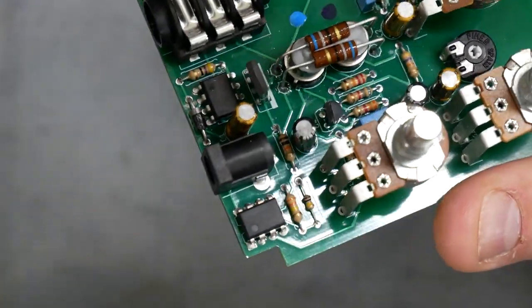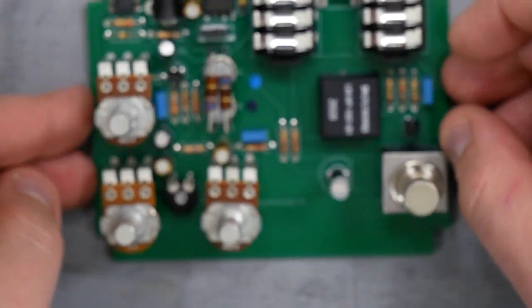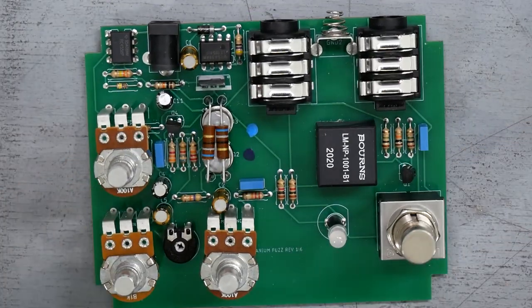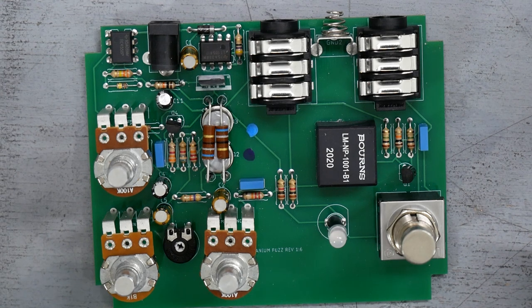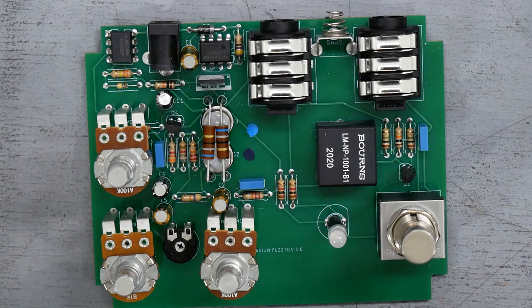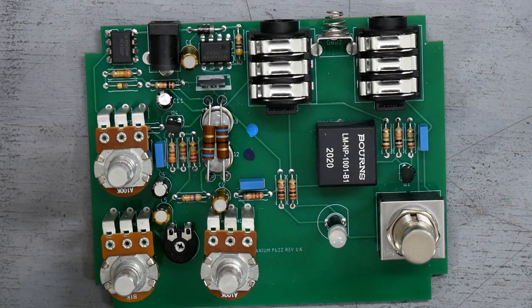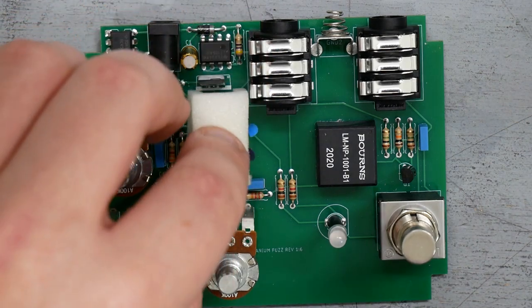And this op amp is just part of the warming circuit. So there we go. That is the Benson Germanium fuzz. I hope I explained the warming circuit to not too complicated for people who don't really care and not too dumbed down for people who are really into that technical side.